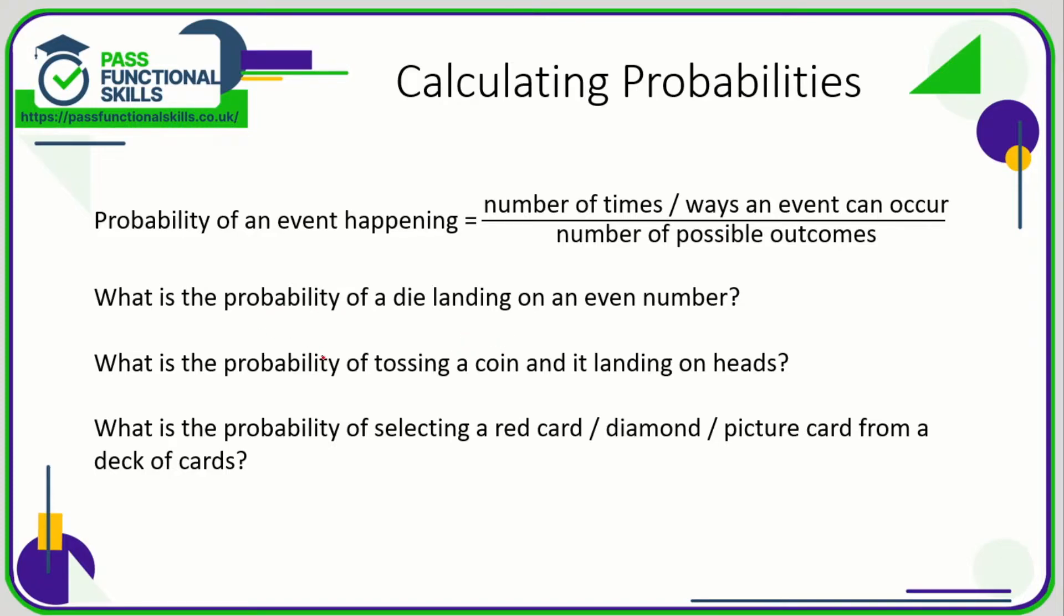What's the probability of a die landing on an even number? Well, a die can land on a one, two, three, four, five, six, so there are six possible outcomes. So that's going to be out of six. What's the number of ways the event can occur? How many even numbers are there? Well, this could land on a two, could land on a four, or it could land on a six. So that is therefore a probability of three out of six, and that can be simplified to one out of two. An easier way of seeing this is the numbers are either even or odd and there's the same number of even or odd, so the probability is one out of two, a half.